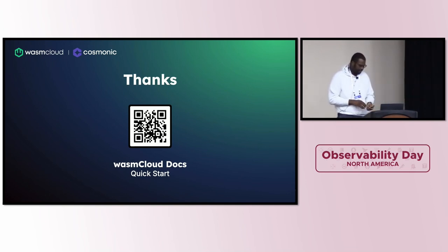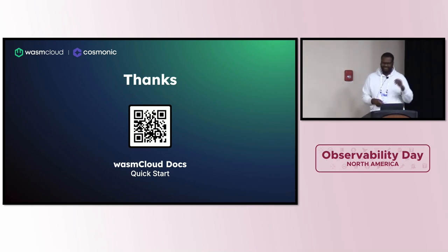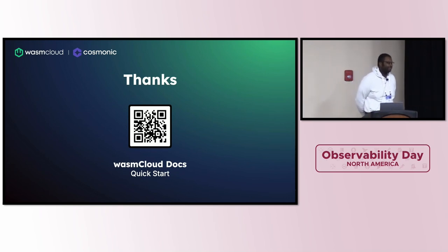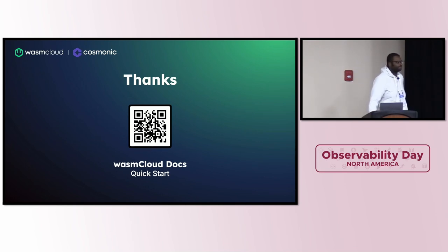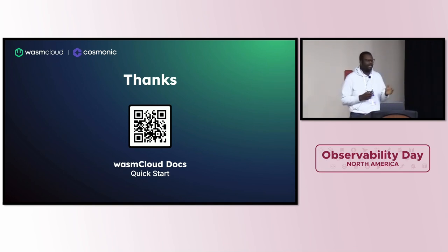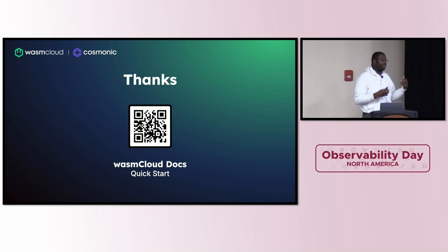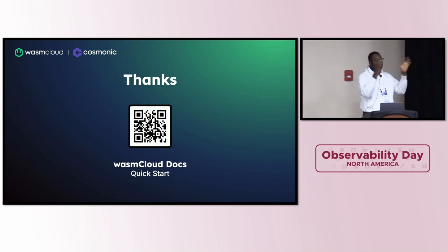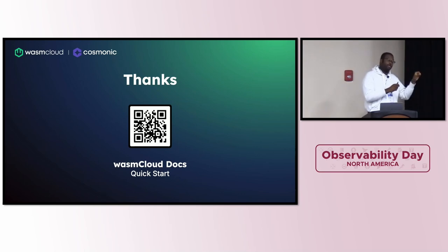Thank you. If you have questions for Victor, you'll have time for one. The question was: how am I supplying the function names? The function names can be provided dynamically. The script takes a list of function names, and because this is written for Rust, I actually turn those function names into Rust identifiers, then look into the binary, find those identifiers, and inject code.